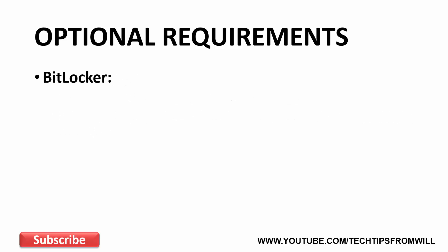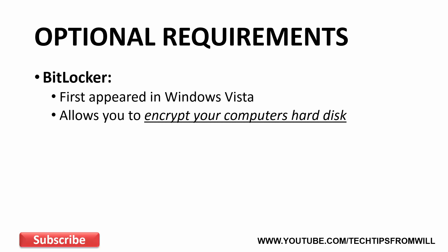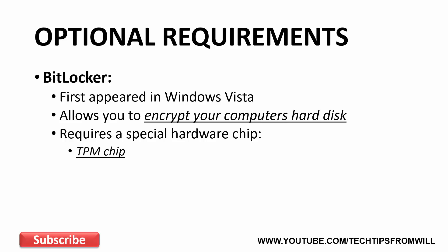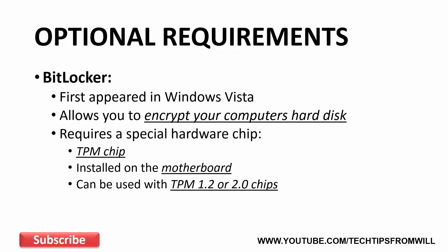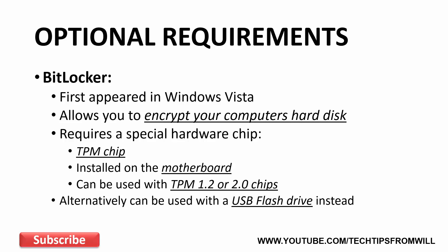Next we have BitLocker. BitLocker first made its debut in Windows Vista and allows you to encrypt your computer's hard disk. However, to use BitLocker, your computer or device must have a special hardware chip called a TPM chip installed on the motherboard. BitLocker can be used with TPM 1.2 or TPM 2.0 chips. If your device does not have one of these chips, BitLocker can still be used but will require a USB flash drive instead.